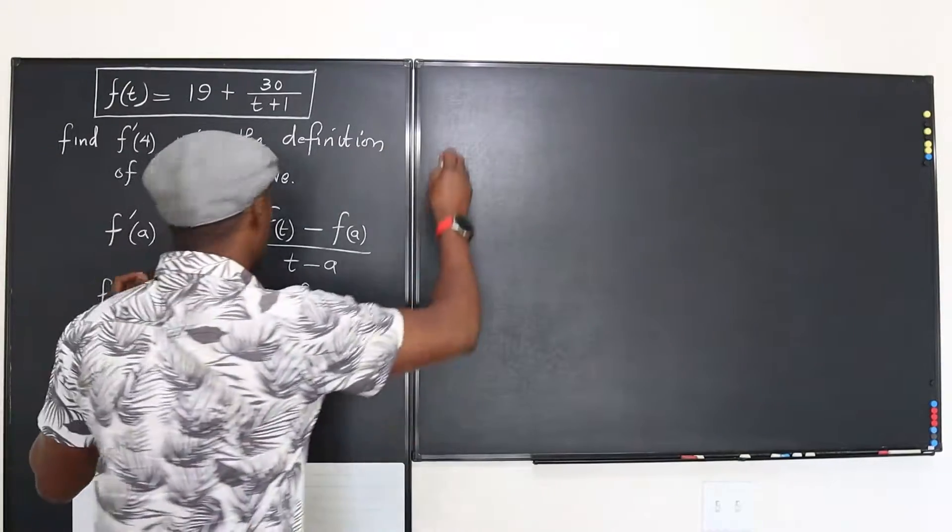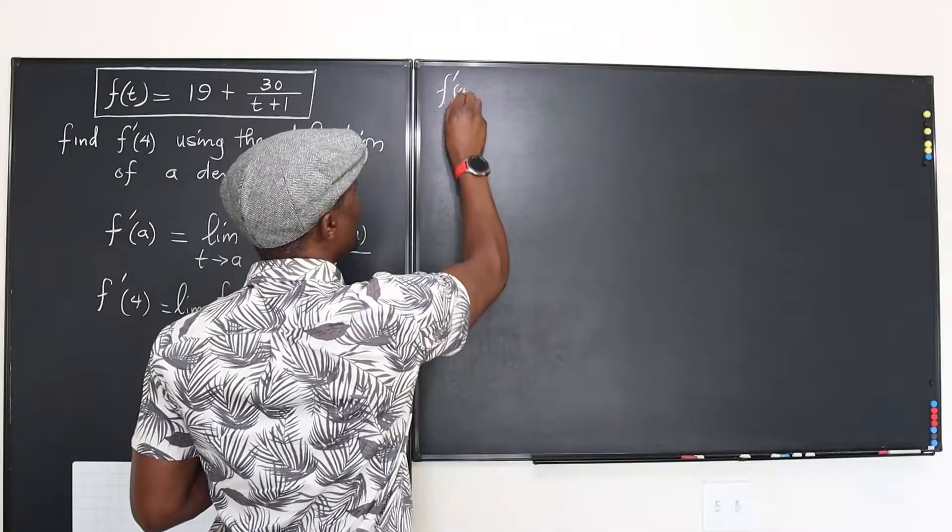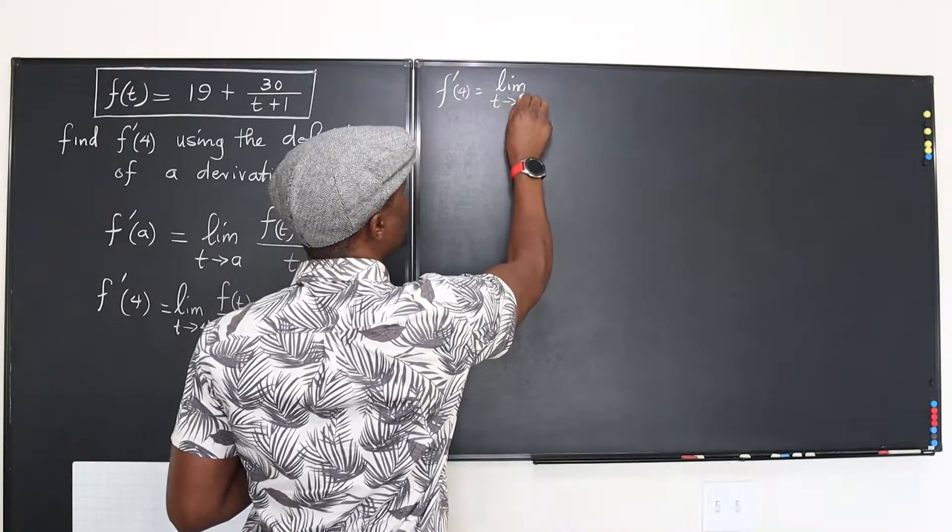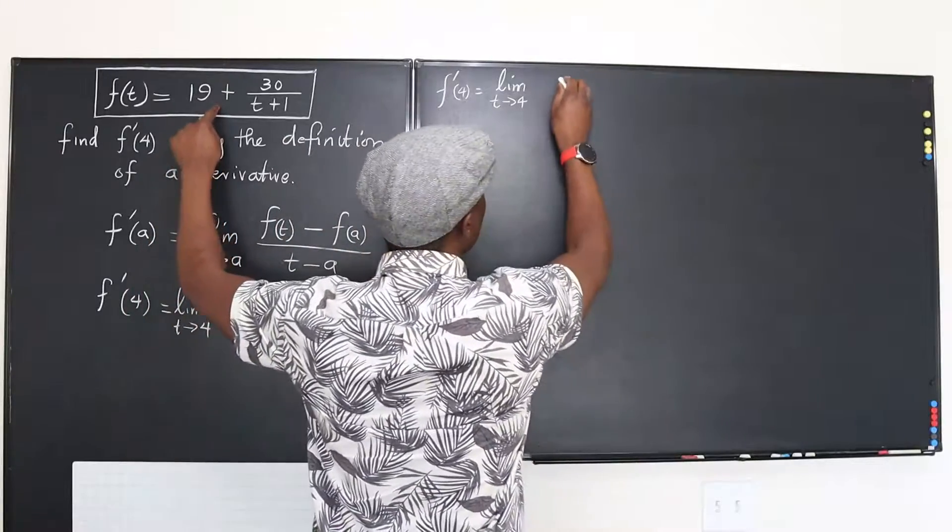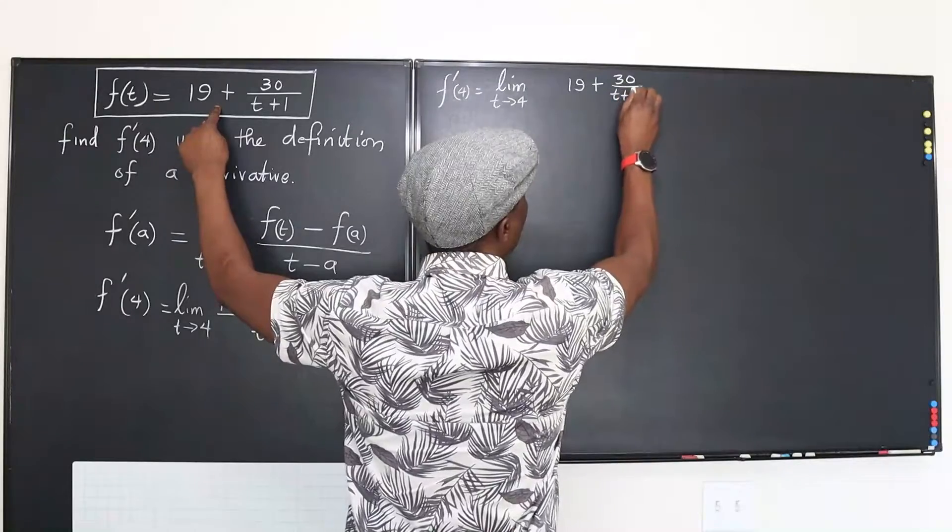Now let's go. So this is going to be the same thing as f prime of 4 is going to be the limit as t approaches 4 of the function itself, which would be 19 plus 30 over t plus 1.